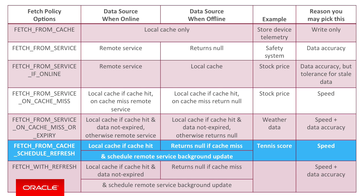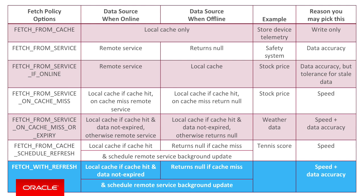A good example is an app downloading the latest Wimbledon tennis scores. However, a problem with the fetch from cache schedule refresh option is that on each fetch it can make the app very chatty with the server if the data hasn't really expired. The fetch with refresh option is much the same but more performant: only if an object is not found in the cache or has expired will it schedule a background refresh with the remote server.